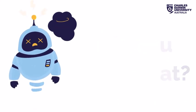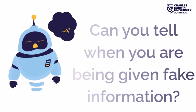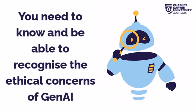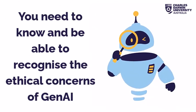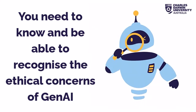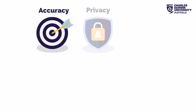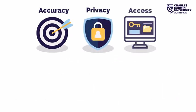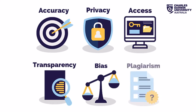It is important to recognise the ethical concerns that come with Gen AI tools. Ask yourself: can you tell when you're being given fake information? There are six main ethical concerns you should remember when using Gen AI tools: accuracy, privacy, access, transparency, bias and plagiarism.